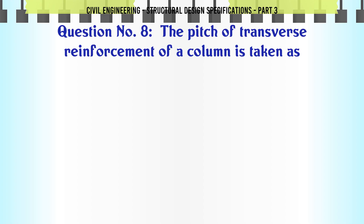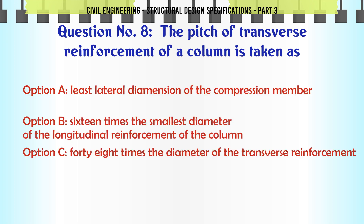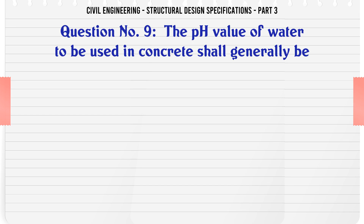The pitch of transverse reinforcement of a column is taken as: a. Least lateral dimension of the compression member, b. 16 times the smallest diameter of longitudinal reinforcement, c. 48 times the diameter of transverse reinforcement, d. Least value of the above. The correct answer is: least value of the above.